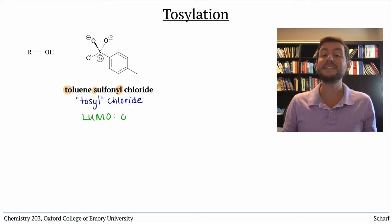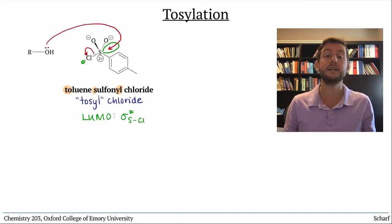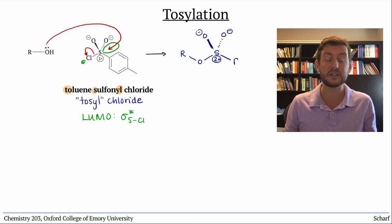Its LUMO is sigma star SCl. The oxygens have negative charges, raising the energies of their sigma star orbitals. And with a positive 2 charge on sulfur, that's a pretty fantastic acceptor orbital. It can react readily with the oxygen lone pair of an alcohol, like this, to give a highly unstable intermediate with a positive formal charge on oxygen, and a 2+ on the adjacent sulfur.